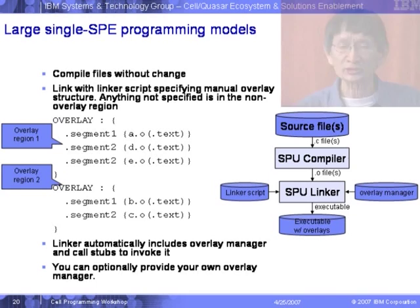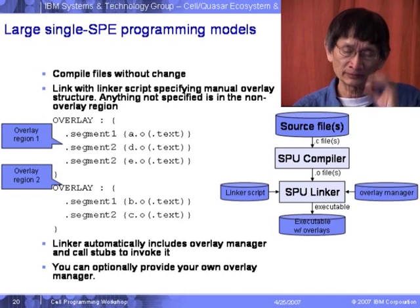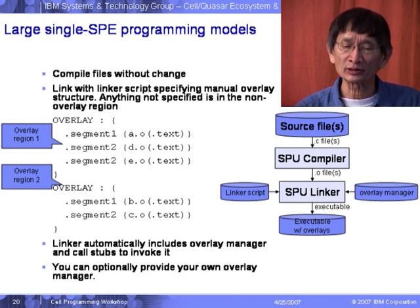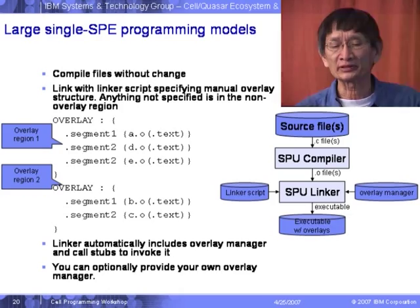An example shows two overlay regions: Region 1 and Region 2. In Region 1 we load the segments of text; Segment 2 has data, text, and objects. Using the features provided by the SPU linker and a linker script, we can ask the SPU linker to link a segment such that it can be loaded only when needed, starting from the address defined by the overlay regions. The overlay manager oversees and manages loading only the required segment.